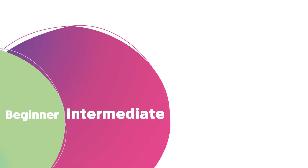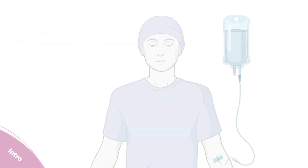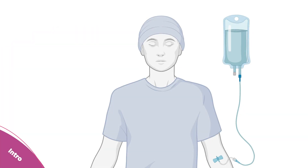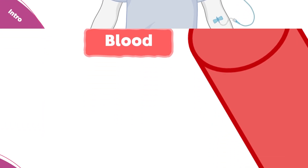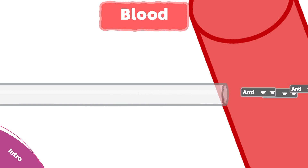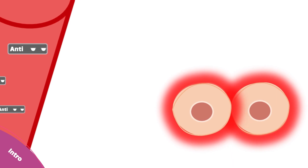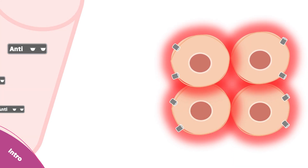Congratulations, you have finished the beginner level. Now let's start the intermediate level. When the anti-metabolites are administered as an intravenous injection to a cancer patient, they travel in the blood vessels and exit from the small capillaries, entering the cancer cells by the nucleotide transporters.